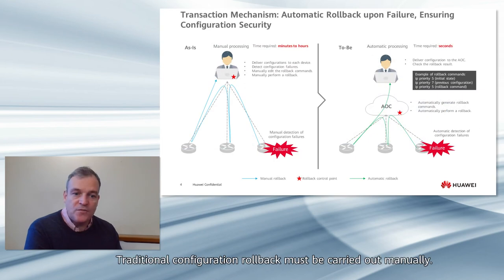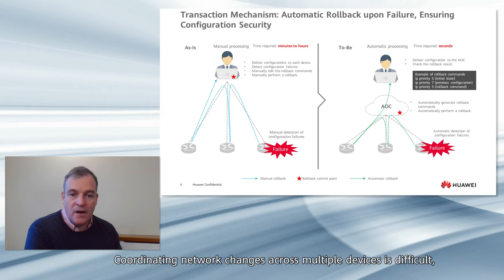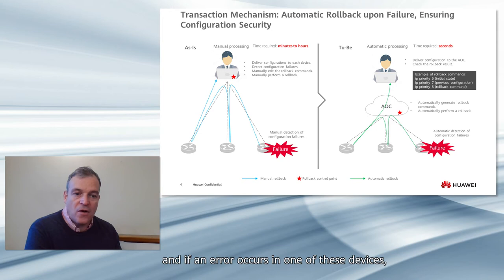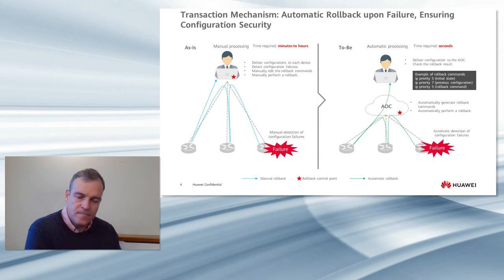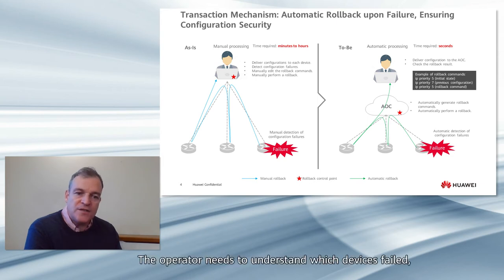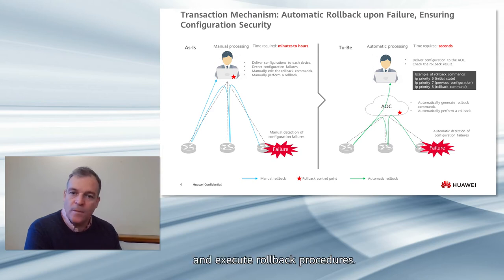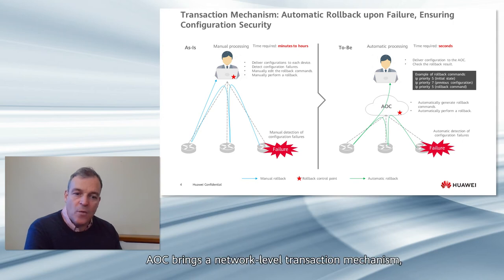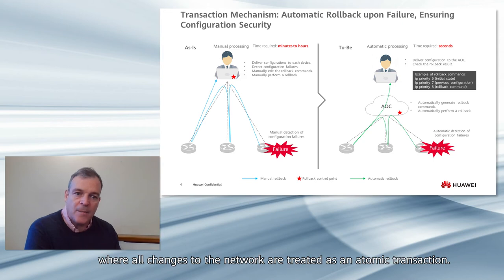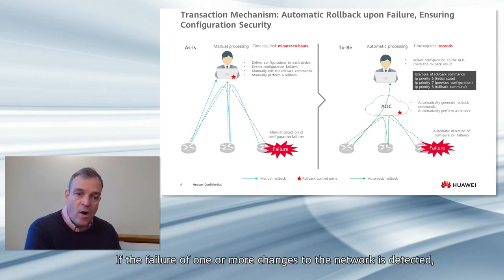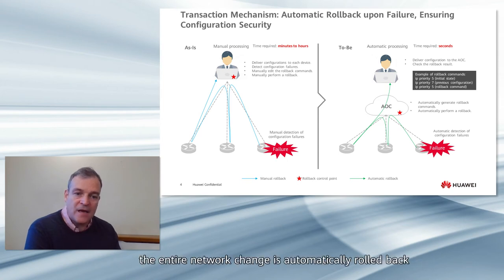Traditional configuration rollback must be carried out manually. Coordinating network changes across multiple devices is difficult, and if an error occurs in one of these devices, each of the previous changes must be rolled back to the previous working state. The operator needs to understand which devices failed and calculate the remediation commands on the affected devices and execute the rollback procedure. AOC brings a network level transaction mechanism where all changes to the network are treated as an atomic transaction. If a failure of one or more changes is detected, the entire network changes automatically roll back to the previous network state.